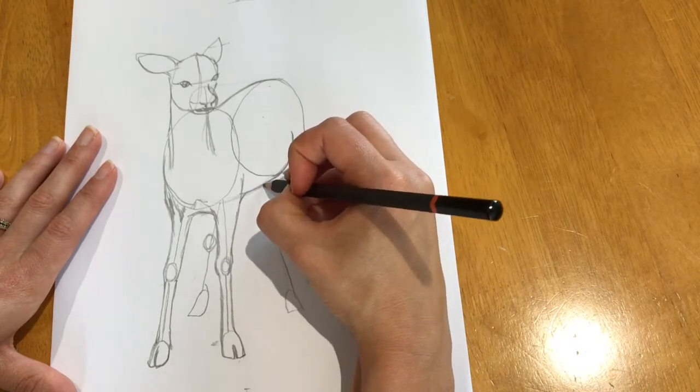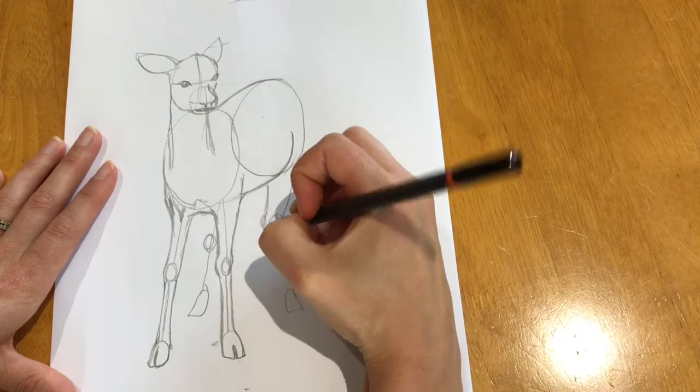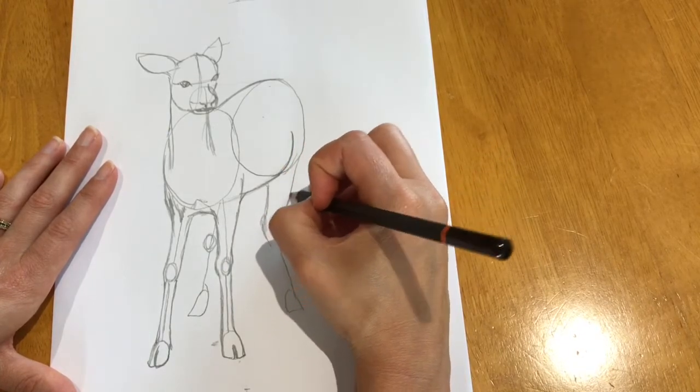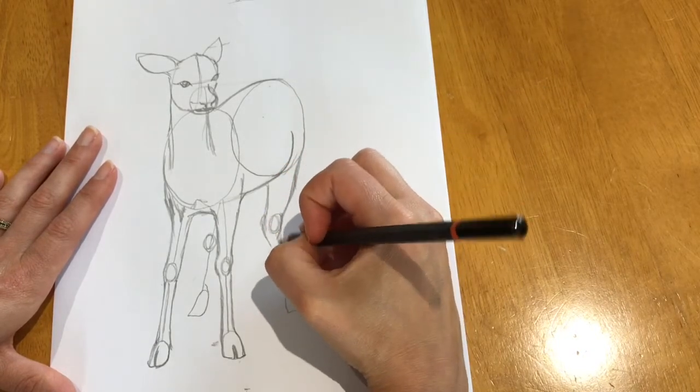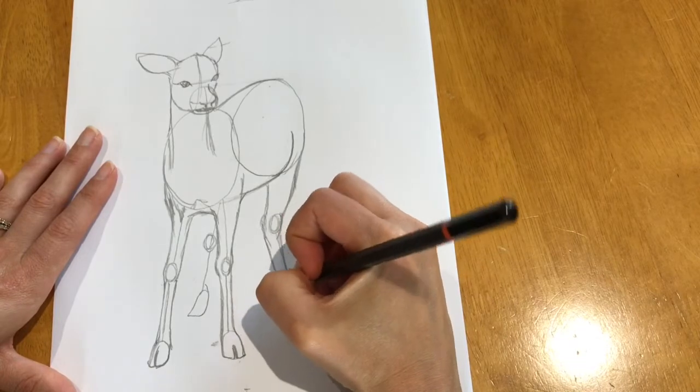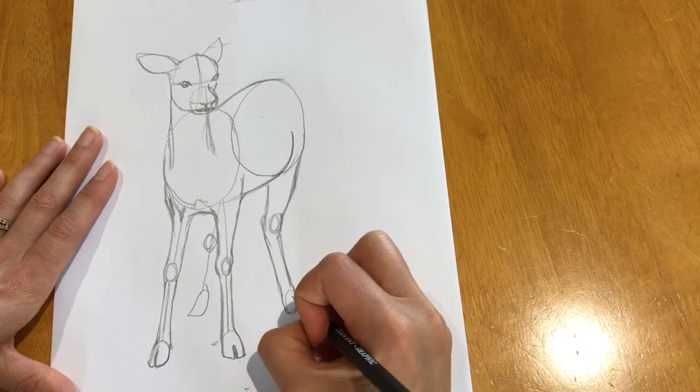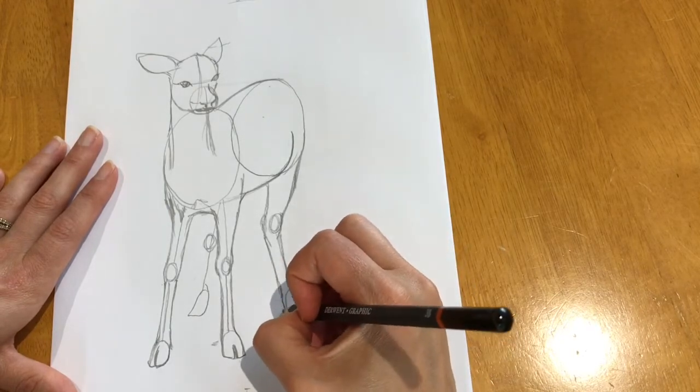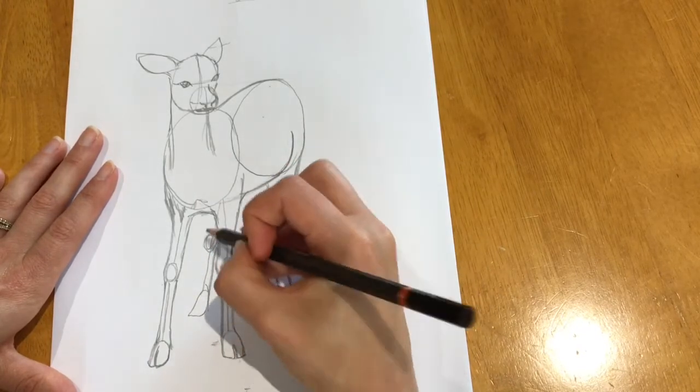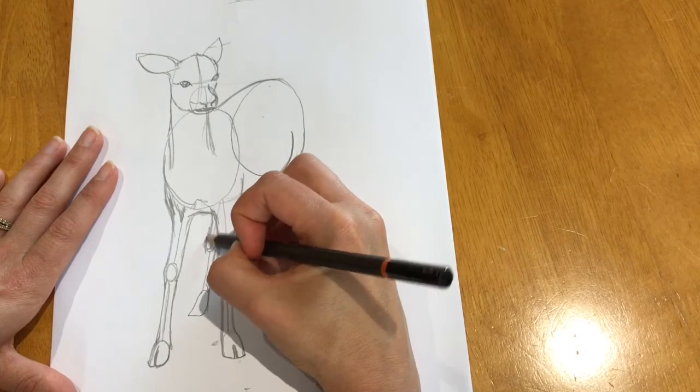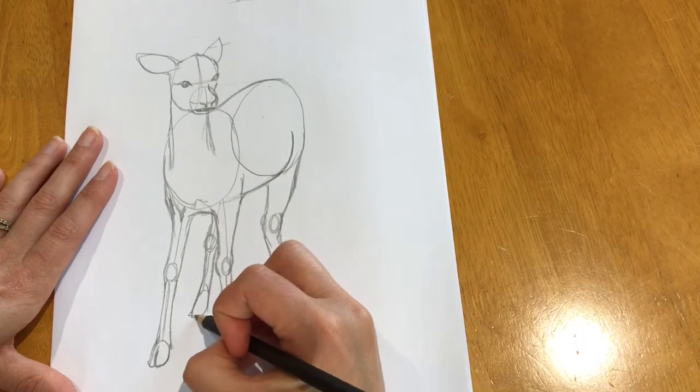And then the hind legs. The knee. And do the back hoof. Again the two toes. Like so. And then the last hoof like that.